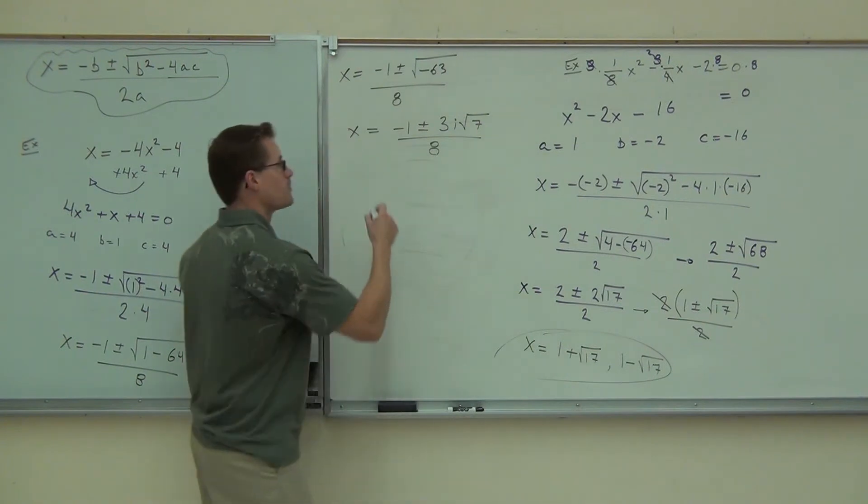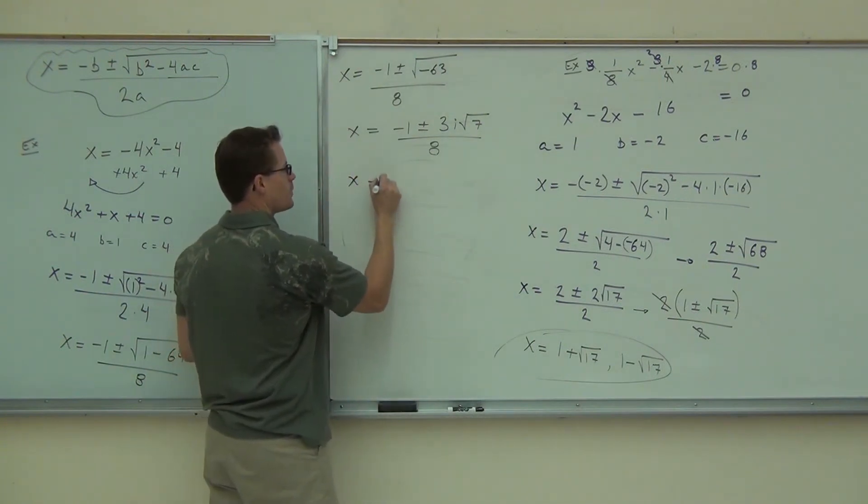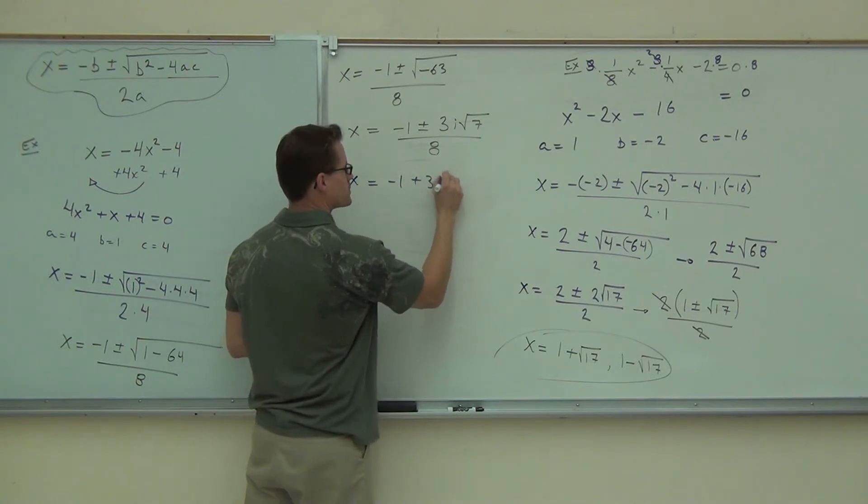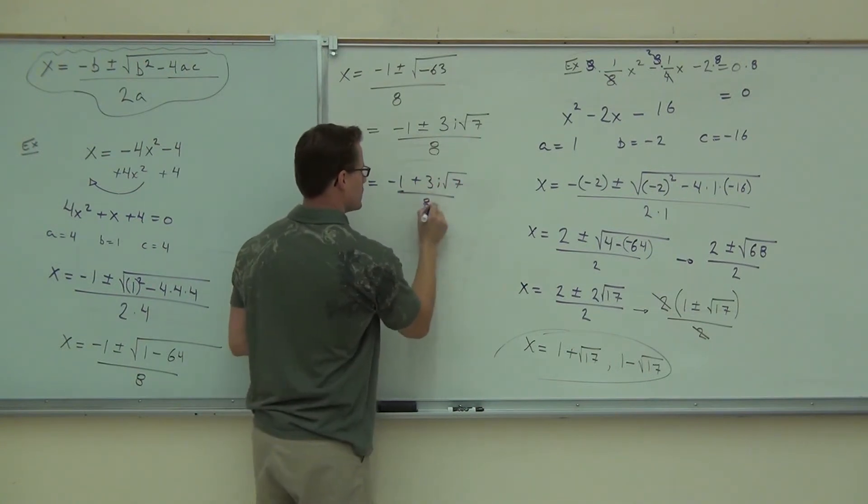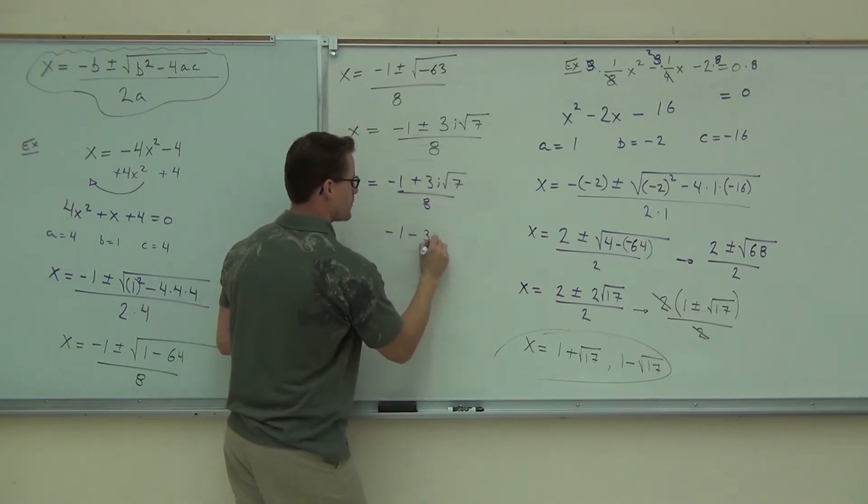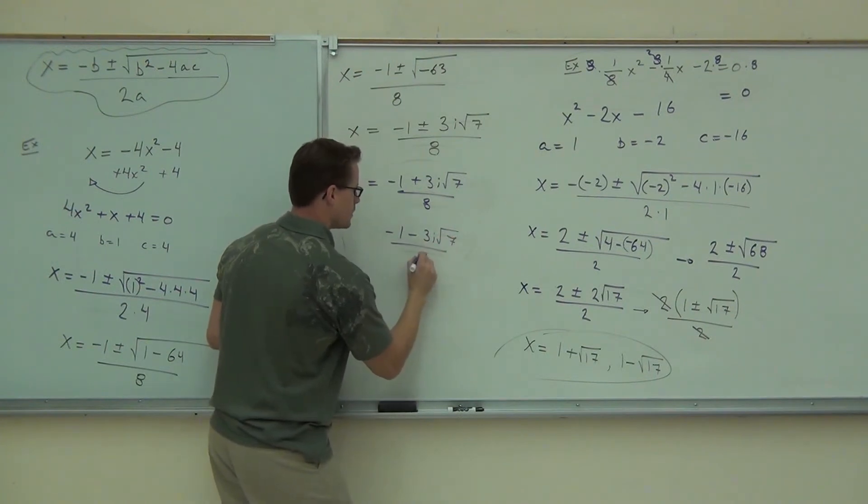You're just going to write out your two solutions: negative 1 plus 3i root 7 over 8, negative 1 minus 3i root 7 over 8. That's it.